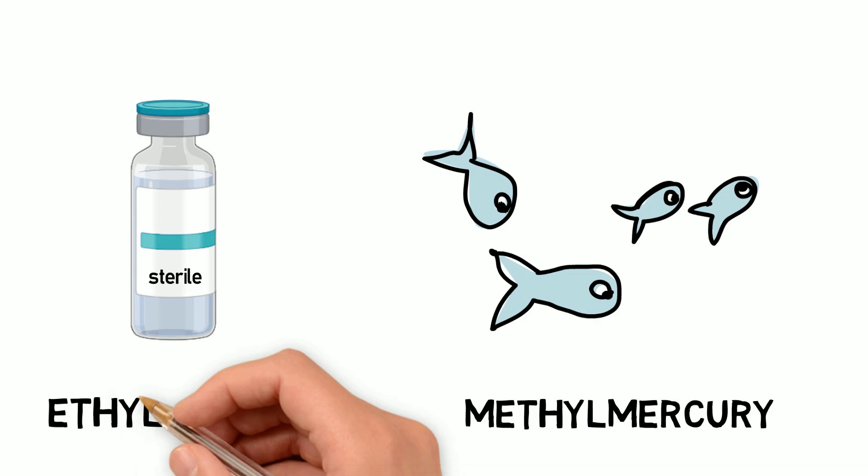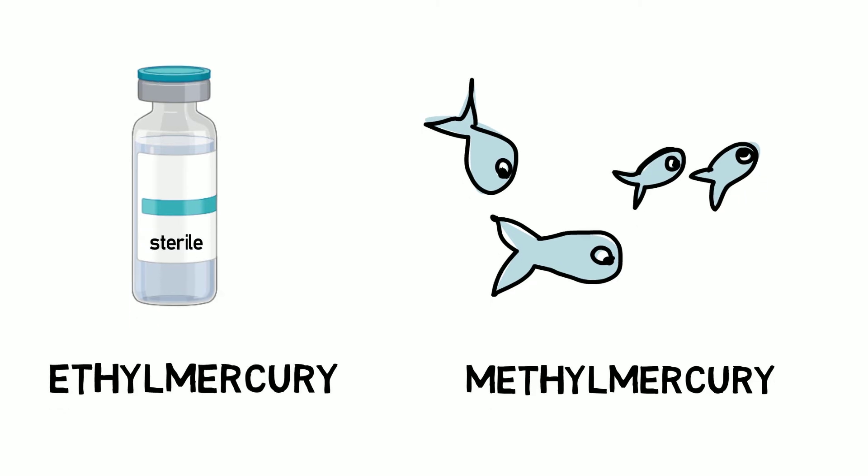But thimerosal contains ethyl mercury, a different compound that's cleared from the body much more rapidly, making it much less toxic, and is harmless to humans in the amount given in the vaccine.